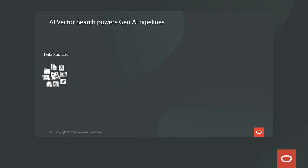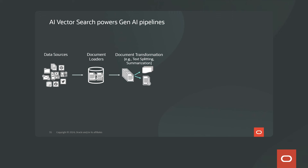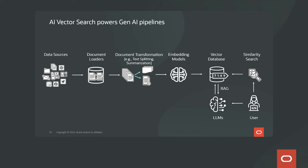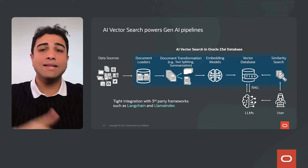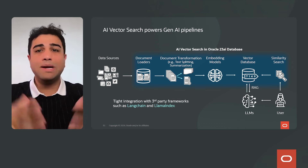AI Vector Search can power a full GenAI pipeline. Your data sources — a database, CSV file, or social media feed — are loaded via a document loader. You transform documents by summarizing or splitting them, generate vectors using an embedding model, and store them in the vector database. Users then do similarity searches or use the RAG pattern to interact with LLMs. Using Oracle 23 AI and AI Vector Search, you can process the entire GenAI pipeline, with tight integration with third-party frameworks like LangChain and LlamaIndex to build more sophisticated applications.